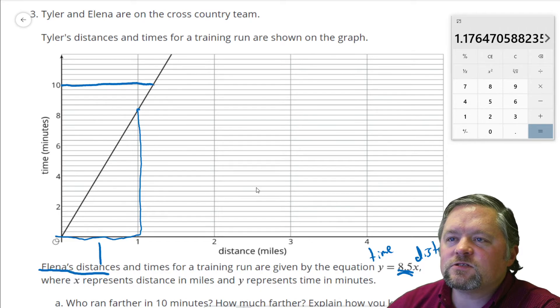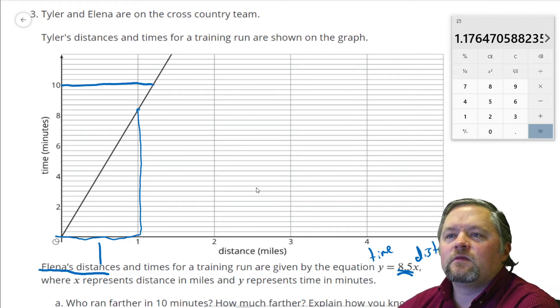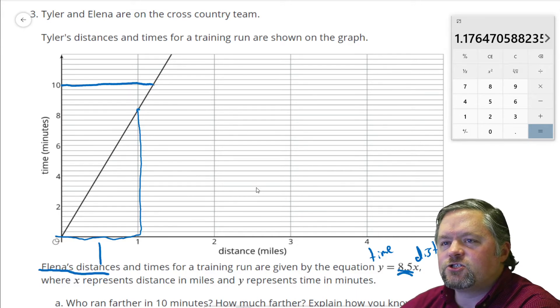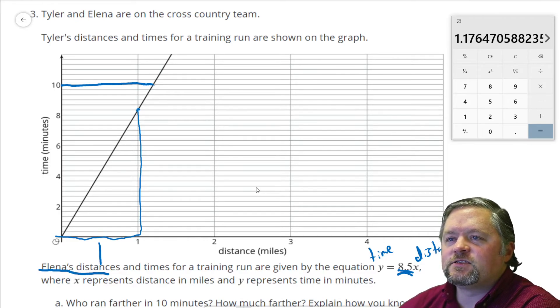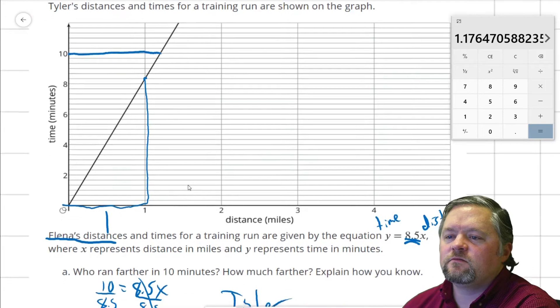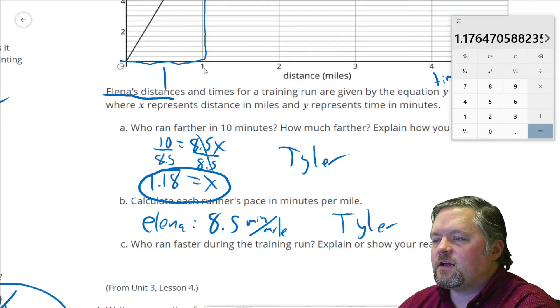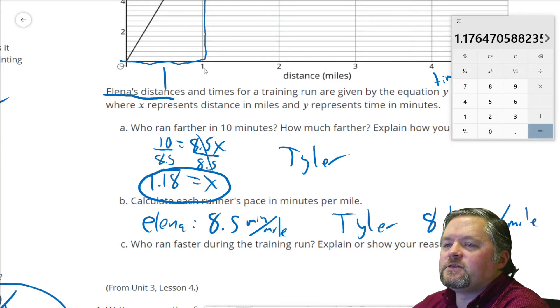How much is each one of those? 6, 1, 2, 3, 4, 5. Each one of those is divided into, from 6 to 8 is divided into 6 chunks. That means each one is, each line is a third. Which means Tyler's pace is 8 and one-third minutes per mile.